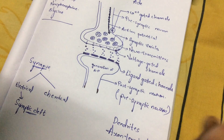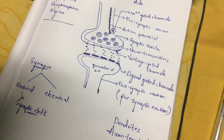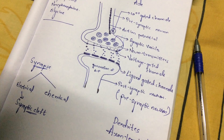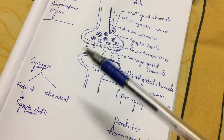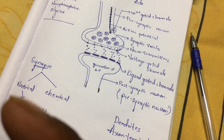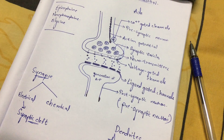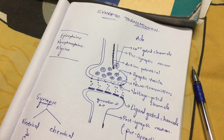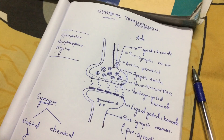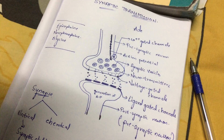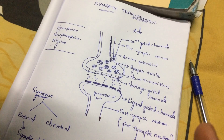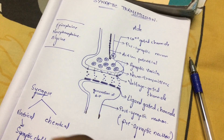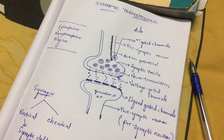This is known as synaptic transmission. For example, when we see a snake, we give an action potential immediately. The eye receptors mainly consist of neurons, and these neurons will mainly send signals to the brain. The brain will then send signals to the target organ. As we see the snake, immediately we will run from that place. This is mainly caused due to synaptic transmission.